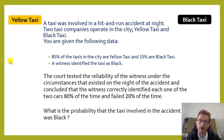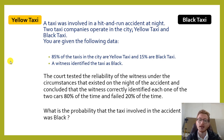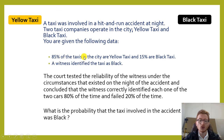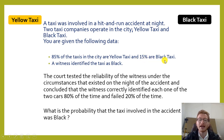It says: a taxi was involved in a hit and run accident at night — someone got run over by a car and the car escaped. There are two taxi companies in the city: the Yellow Taxi Company and the Black Taxi Company. You are given the following data: 85 percent of the taxis in the city are yellow, and 15 percent are black.